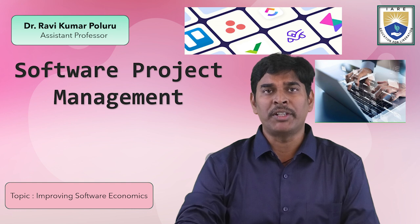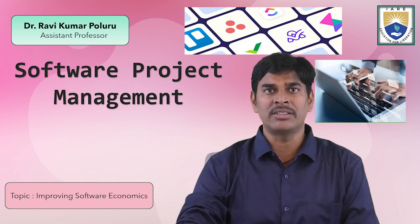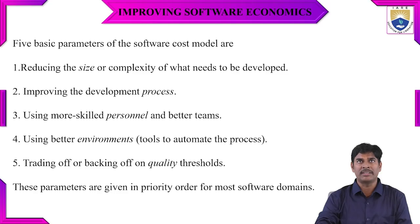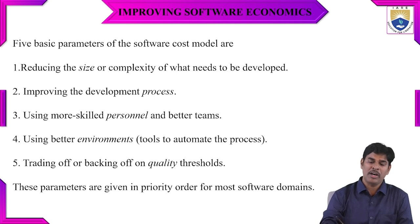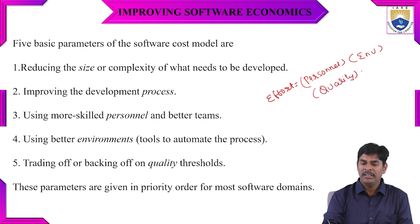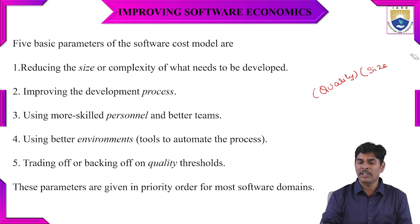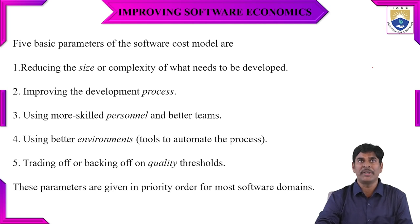Good morning. I am Dr. Ravikumar, working as assistant professor in the department of information technology. Today we are going to discuss about improving software economics. We know that we calculate software economics using the formula: Effort equals Personnel times Environment times Quality times Size raised to the power of Process. These five parameters are used to estimate software cost.